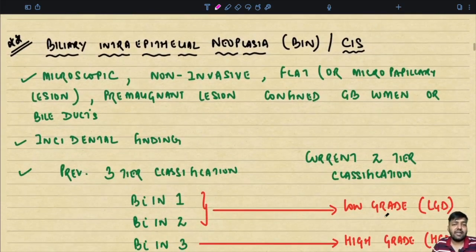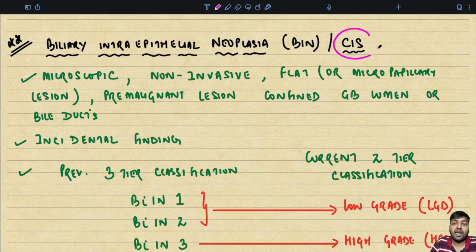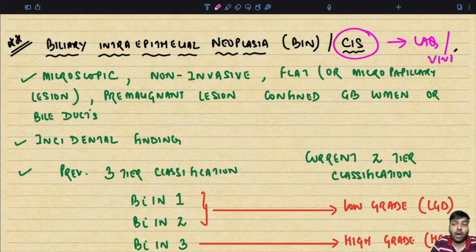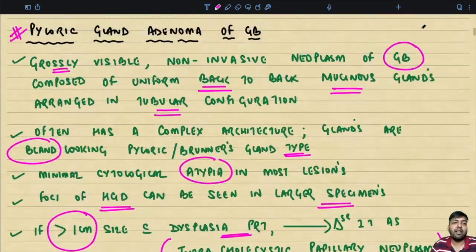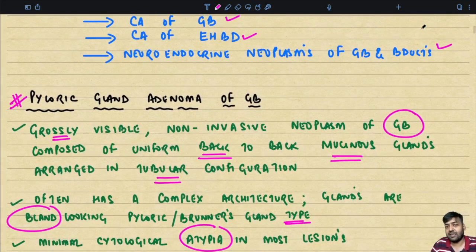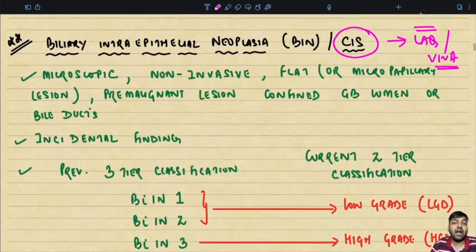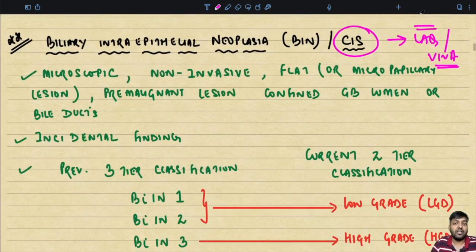The next entity is biliary intraepithelial neoplasia, also called BIN or carcinoma in situ. This is a frequently asked long answer or viva question, especially for postgraduate students. It is a precursor lesion — remember that pyloric gland adenoma is not a precursor, whereas BIN is regarded as a precursor lesion. Very importantly, it is a microscopic entity; usually you cannot see it grossly.